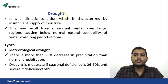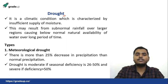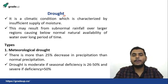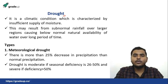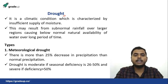So what is drought? Drought is actually a climatic condition which is characterized by very less rainfall or very less moisture, and this may result from subnormal rainfall over larger regions causing below-normal natural availability of water over a longer period of time. So when over a longer period of time there is insufficient supply of moisture over a larger area, then it may result in drought.